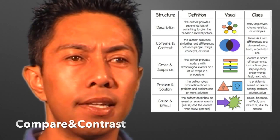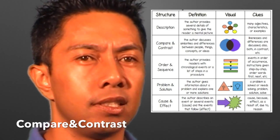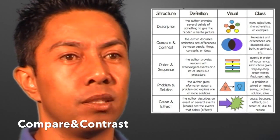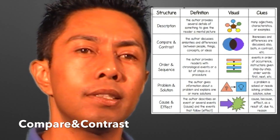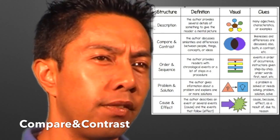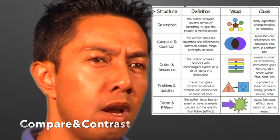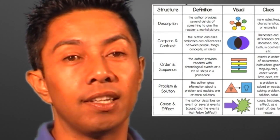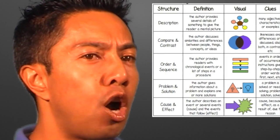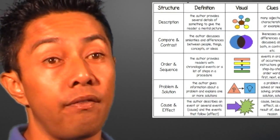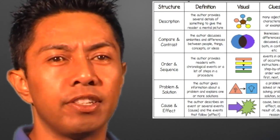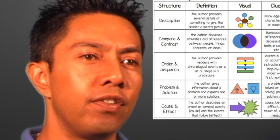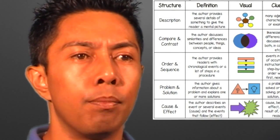Compare and contrast is where an author looks at similarities and differences between two or more things. They might use words such as 'both' when describing similarities or 'however' when describing differences. For example, you could compare and contrast a cat and a dog, or Venus and Mars. The most common visual way to represent this is a Venn diagram, where similarities go in the overlapping segment in the middle and differences go in the respective outer portions.